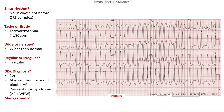Regardless, how do we manage this patient? Following the ALS algorithm, this patient has a tachyarrhythmia which is unstable, as they are haemodynamically unstable. So they would require DC cardioversion.